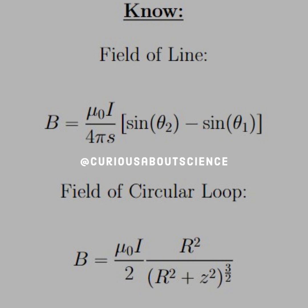And the field of a circular loop is B equal mu-naught I over 2 times R squared over R squared plus z squared to the 3 halves power. Which should look familiar from the electric fields.